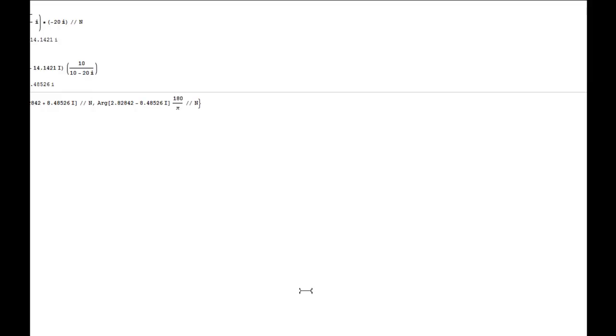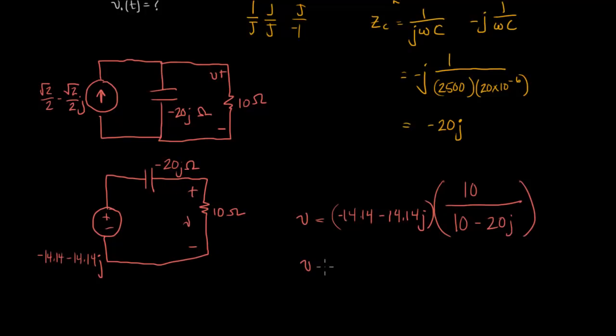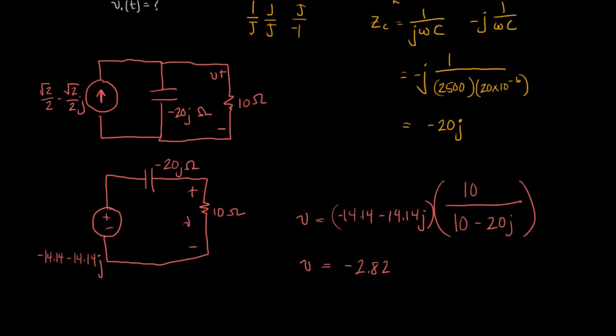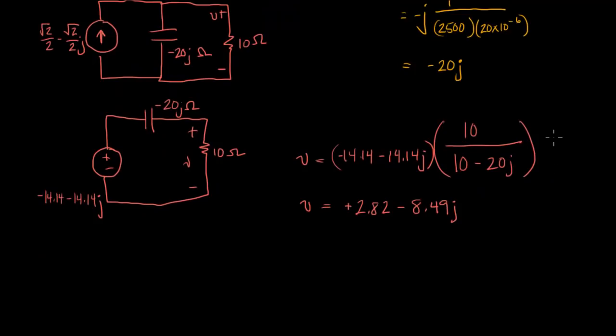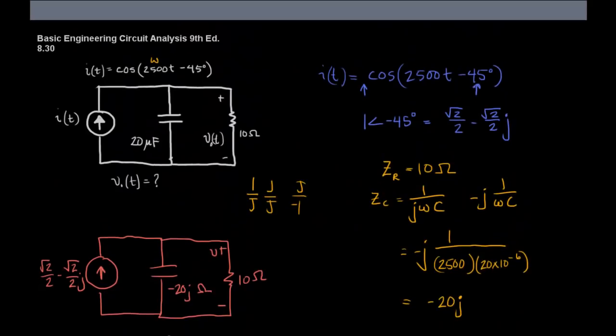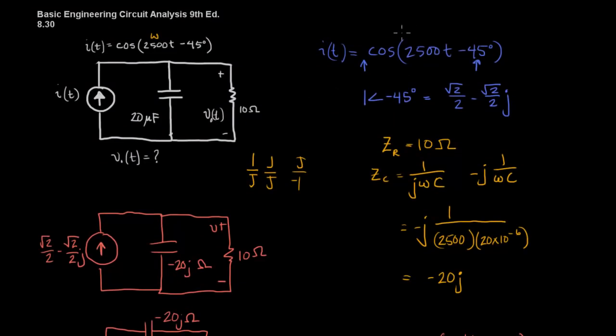So I have v equals 2.82 minus 8.49 j. Now it's important to remember that this is in complex form. Remember how we converted from the time domain to the frequency domain?